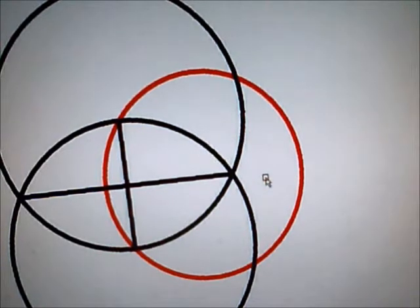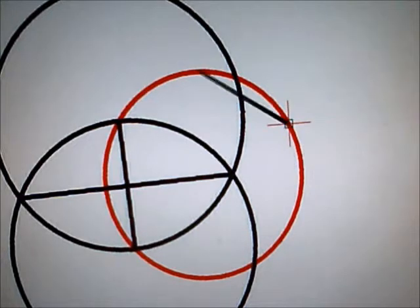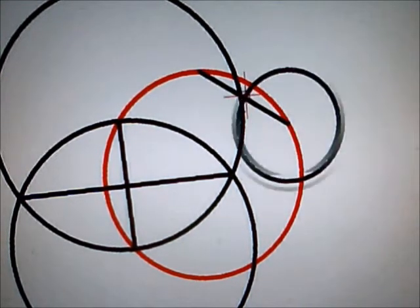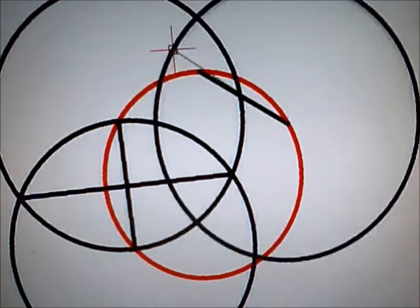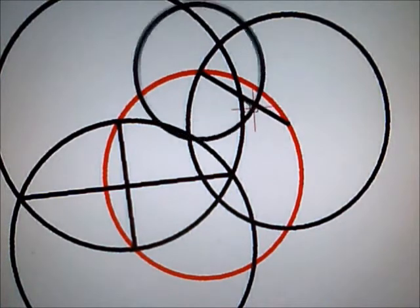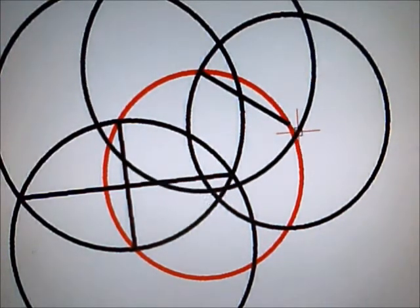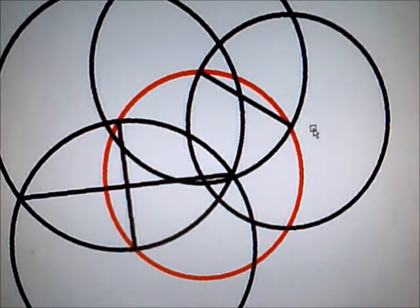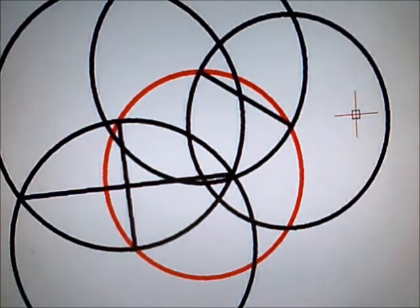Now, he says, do the same thing again somewhere else on the circle. So, we have to draw another chord. Let's draw it over here. We have to find that perpendicular bisector again. So, now we've got to draw a circle whose center is one side and whose radius is the other side. And then, do it again, going the other way. And then, draw a line through.